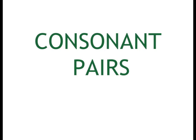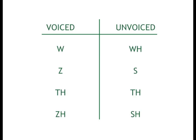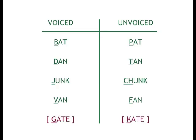Consonant pairs are another very important concept to understand for English spelling. Consonant pairs are pairs of consonants produced with the mouth and tongue in the same position — just one is voiced and the other is unvoiced. According to Margaret Bishop in 'The ABCs and All Their Tricks,' page 48, a consonant sound is unvoiced when the voice is not used at all in producing the sound and only the breath is used. When it is voiced, you use your voice to produce the sound. Compare these words: bat, pat; dan, tan; junk, chunk.